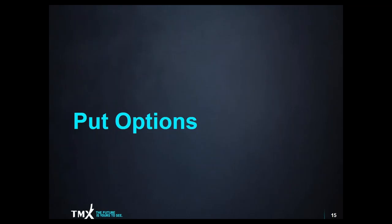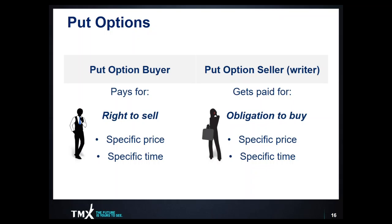When it comes to put options, there is again a buyer and a seller — the buyer has a right, the seller has an obligation — but in this case it works differently. The put option buyer pays a premium and secures the right to sell the underlying security at a specific price for a specific time. The put option writer receives that premium and takes on an obligation to buy the underlying security at the defined price for that specific period of time.